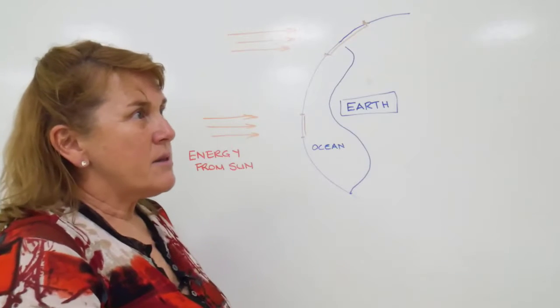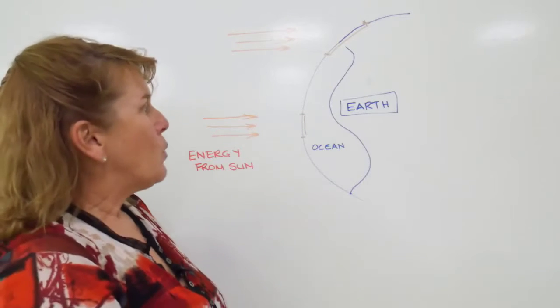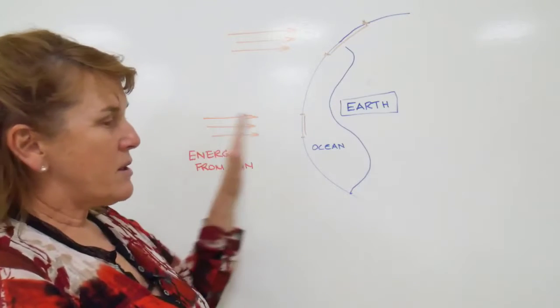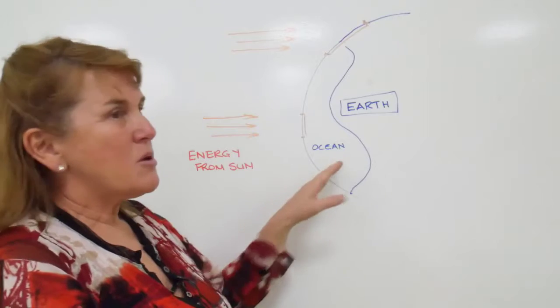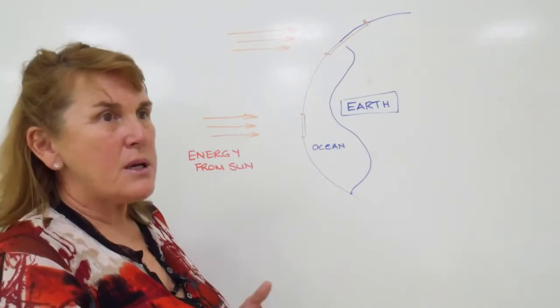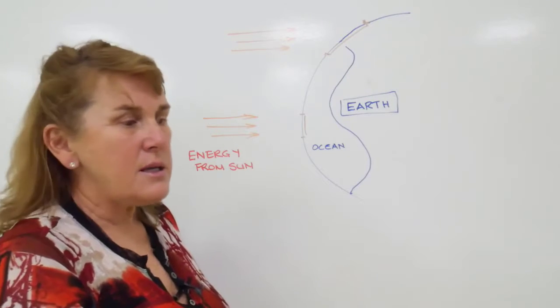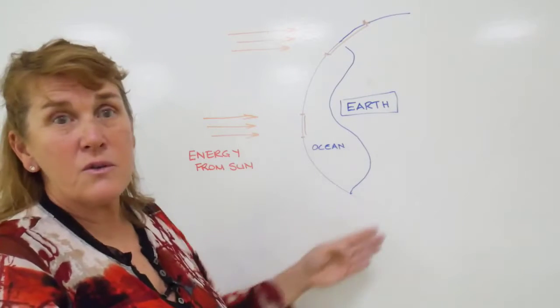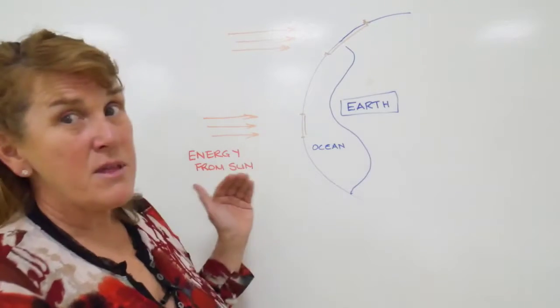There are three main ways that this transfer happens. One is direct thermal transfer or heating. We sometimes talk about the ocean and the atmosphere as being heat sinks. The ocean thermally conducts heat, and that can cause convection in the ocean or drive ocean currents.